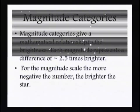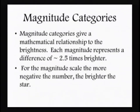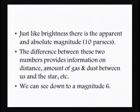That's why we really want to know what that luminosity is. We have magnitude categories — a mathematical relationship to brightness — where each magnitude represents a difference of about 2.5 times. When the magnitude scale was originally set up, they didn't account for things brighter than zero, so negative numbers were added. The more negative the number, the brighter the star. To find absolute brightness, we mentally place all stars at a distance of 10 parsecs.